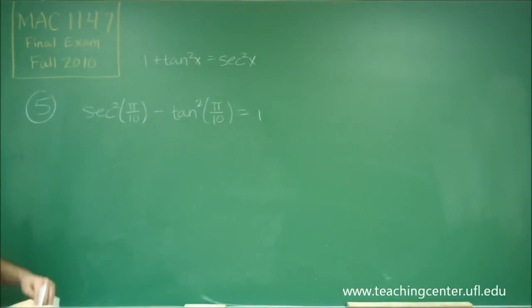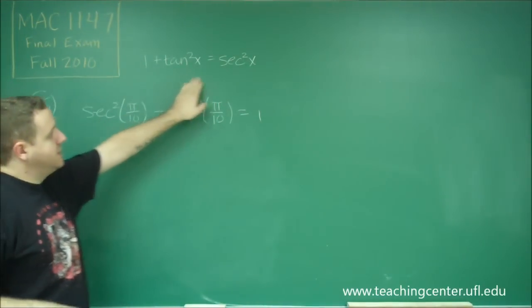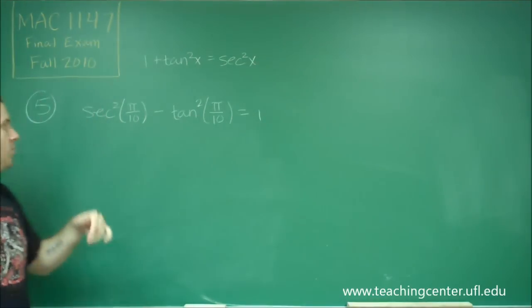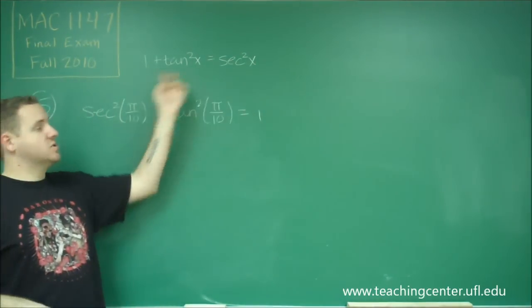So you can see here, this is just rearranging this. If we subtracted the tangent squared to both sides, we would get secant squared minus tangent squared equals one.